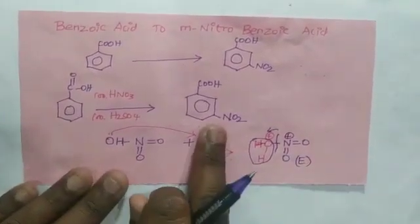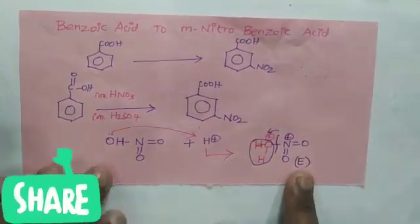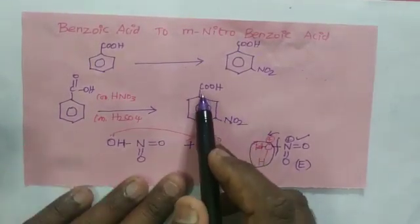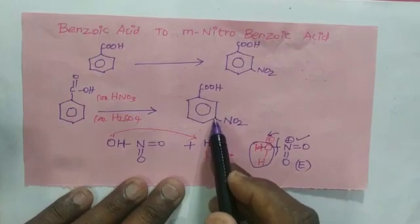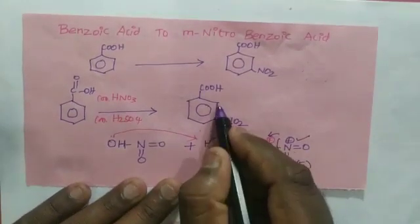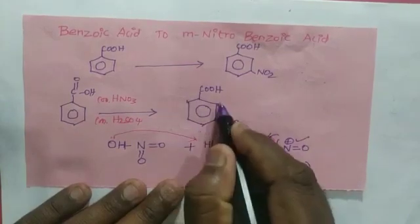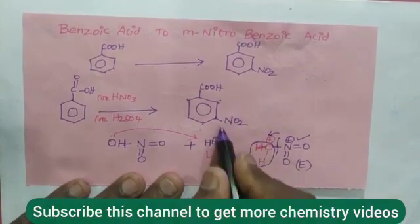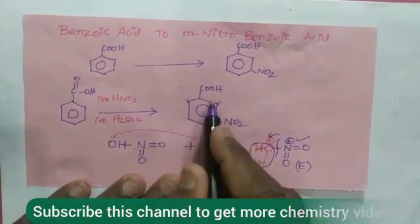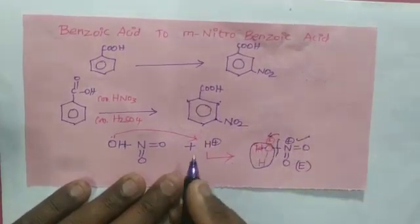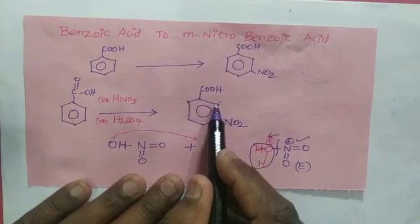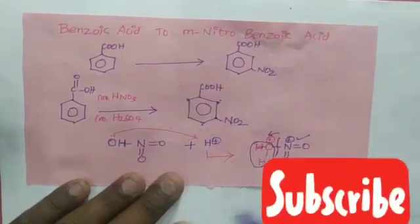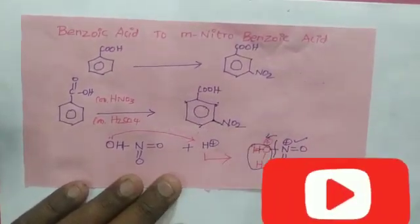The electrophile NO2+ goes and attacks at the meta position because it carries a positive charge and electrophiles have positive charge. Because of the carboxylic acid group on benzoic acid, the meta position is slightly more electron-dense, while the ortho and para positions are slightly electron-deficient — that is, less electron-dense. So there is positive-positive repulsion at the ortho and para positions, and the electrophile is attracted to the more electron-dense meta position. That is why substitution occurs at meta.